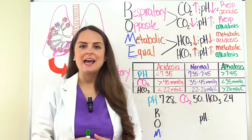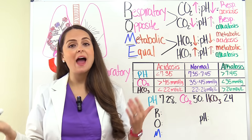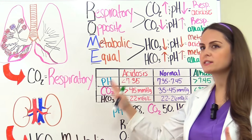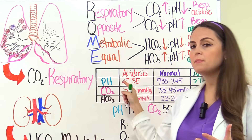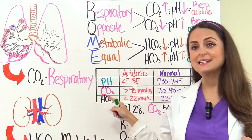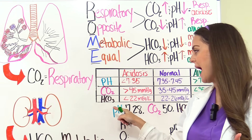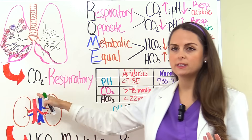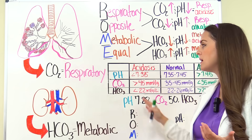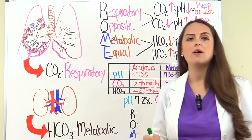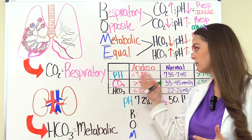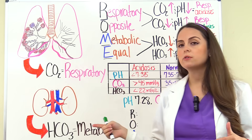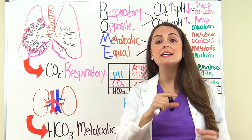So what are we looking for whenever we're solving these ABG problems? Well, we're looking for a potential acid-base imbalance. For exams, they're going to give you three things and you're going to have to look at the values and determine what is going on with the patient. They're going to give you the blood pH level, along with the carbon dioxide level represented as CO2, and the bicarb level represented as HCO3. CO2 represents the respiratory system, and HCO3 represents the metabolic system. When blood pH decreases too much, we have acidosis, or if it increases too much, we have alkalosis, and these two systems will try to balance that blood pH back to normal.